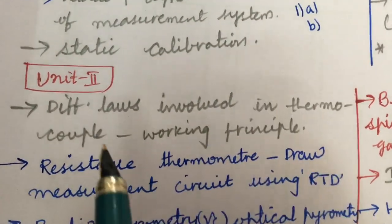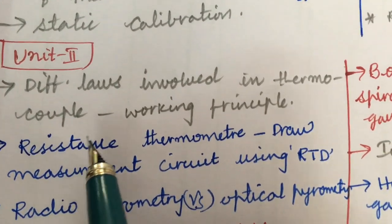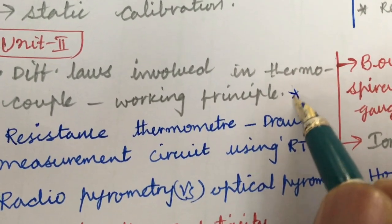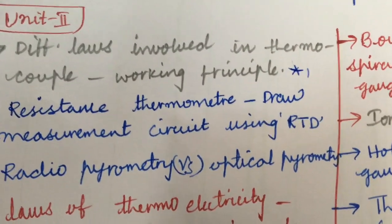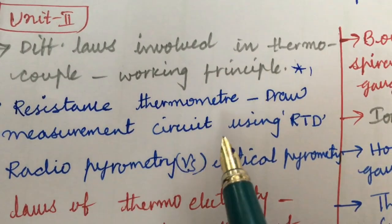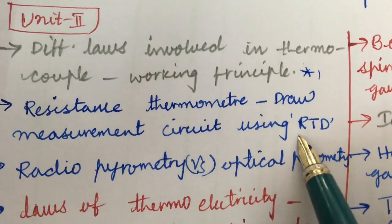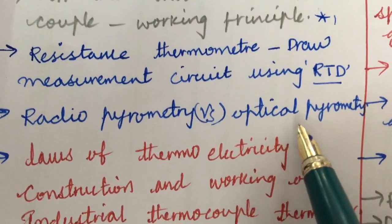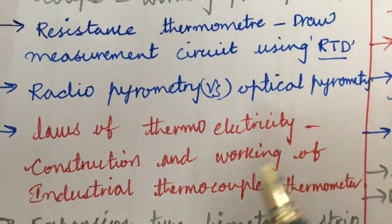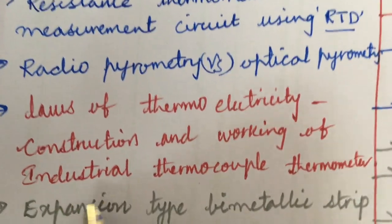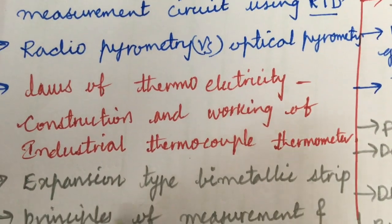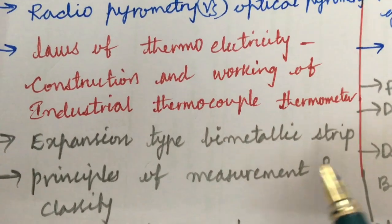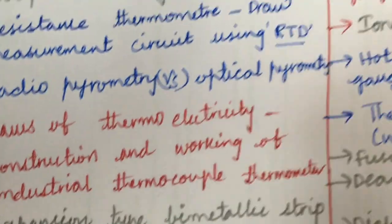The other concepts also like Unit 2, we can expect two questions here. Different laws involved in thermocouple and the working principle, I mean it is all about the measurement of temperature in the second unit as well as the pressure concepts. And the resistance thermometer, draw measurement circuit using RTD and radio pyrometry versus optical pyrometry their differences, and the laws of thermoelectricity, construction and working of industrial thermocouple thermometer and expansion type bimetallic strip and its working principle and principles of measurements and their classification, the different types.